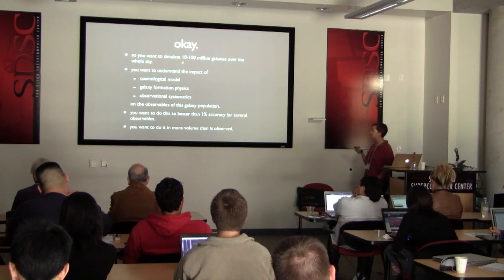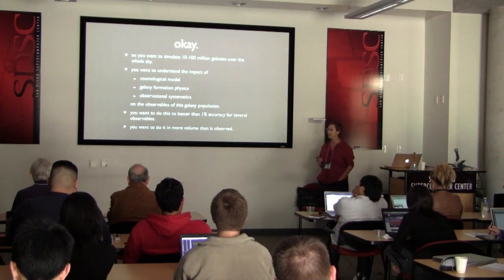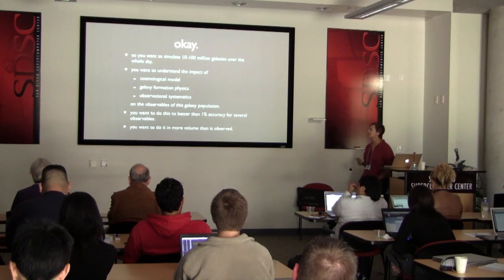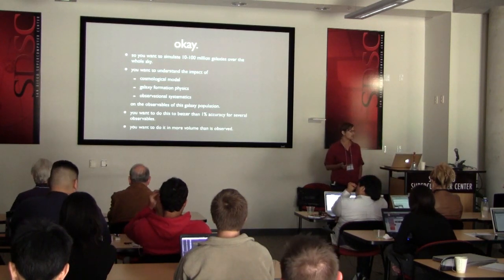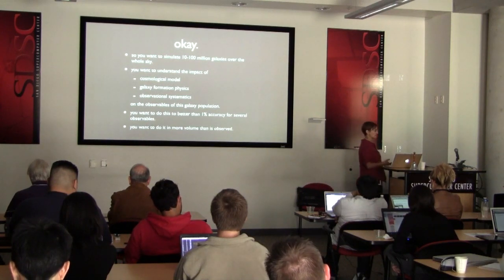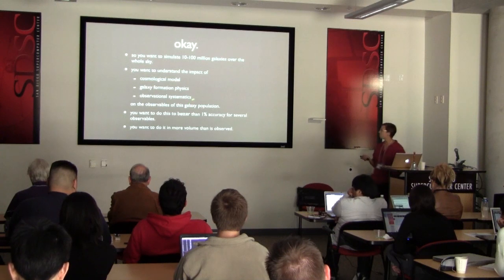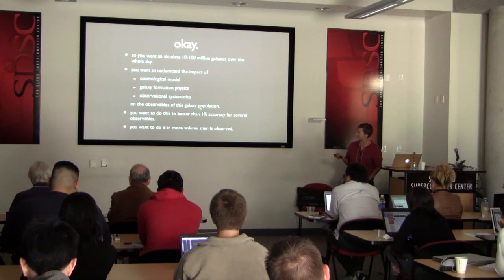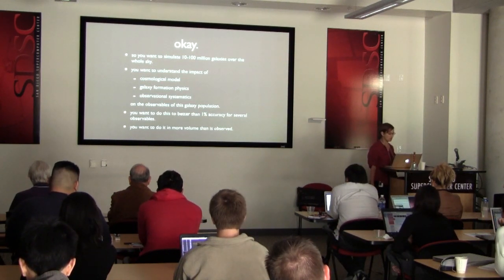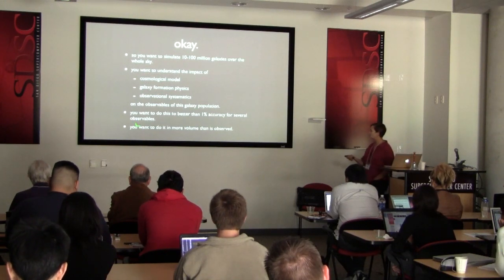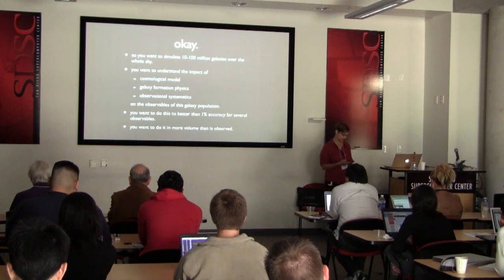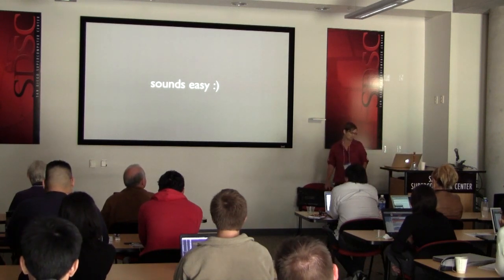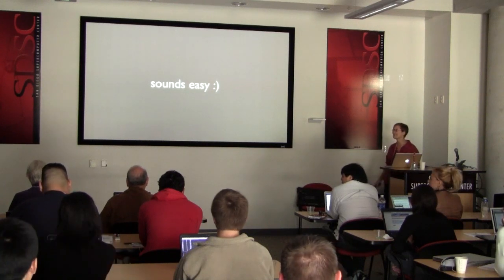So to summarize: you want to simulate 10 to 100 million galaxies over the whole sky, in many different cosmologies, marginalizing over all uncertainties in galaxy formation physics, including all observational systematics, to better than a percent accuracy for many different cosmological observables — and do this over more volume than you've observed. Sounds like just one PhD thesis, right? Great job security.